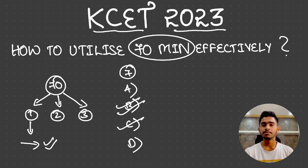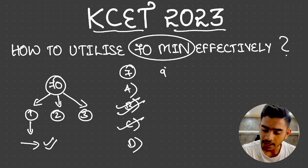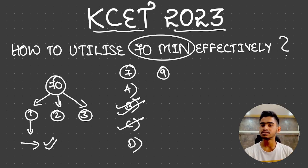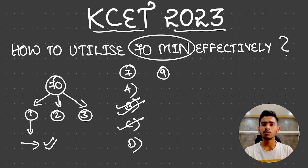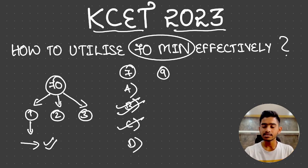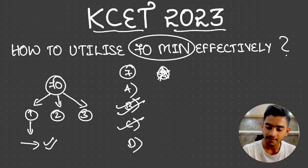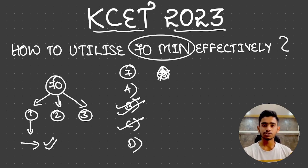If you are blank on a question — say question number seven — just put a circle mark over it. This hints that you need to think about it later. If a question, say number nine, can be solved but requires a lot of time — like a numerical — put a star mark on it. Save those for a later stage so you don't waste time that could be used to solve easier questions first. These are the four indications for Slot 1.